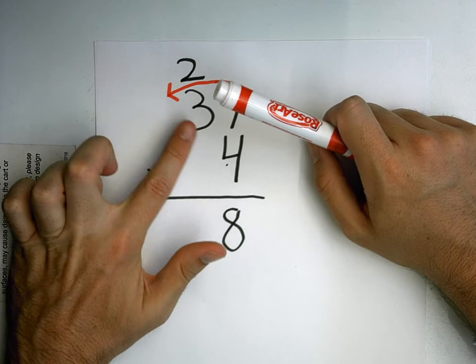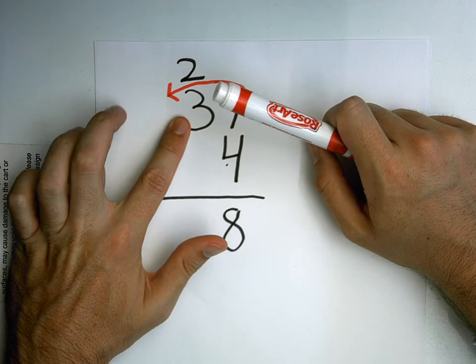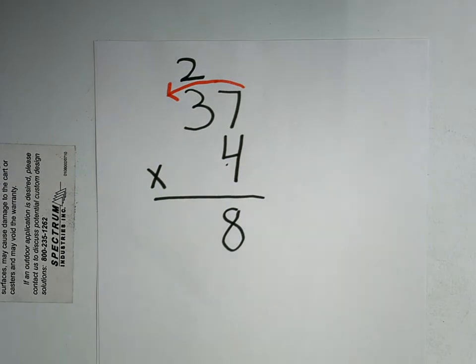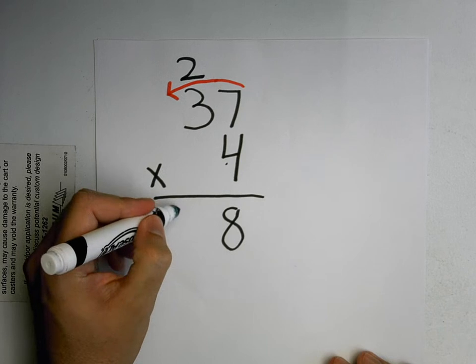So like Kylie told me, four times three is twelve. What's twelve plus two? Marisa? Fourteen. Fourteen. So I gotta put my fourteen down here.